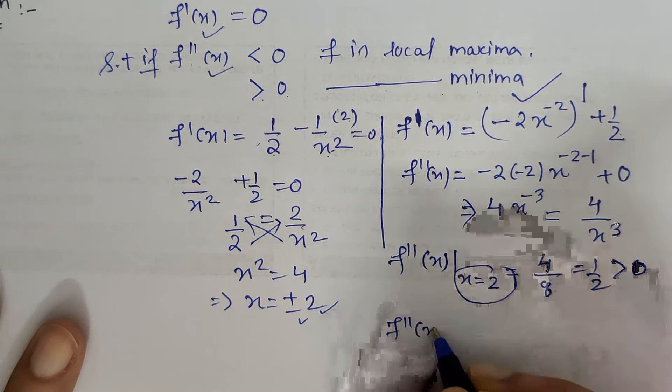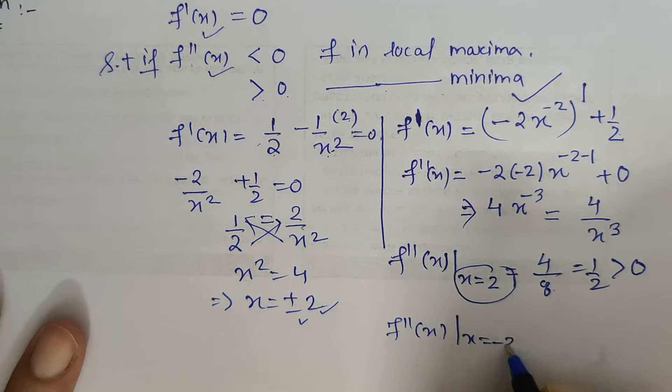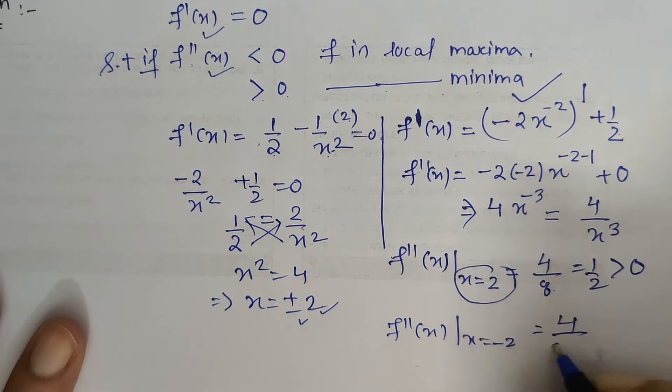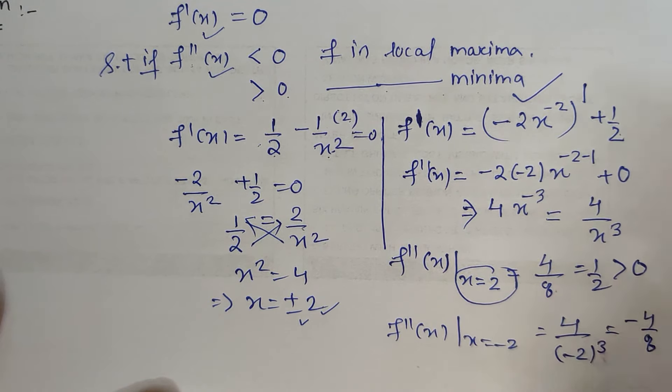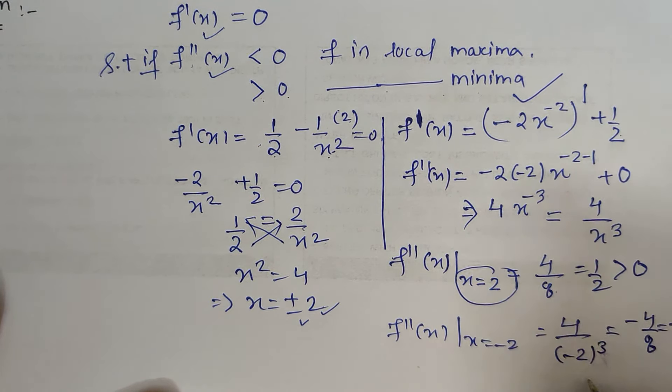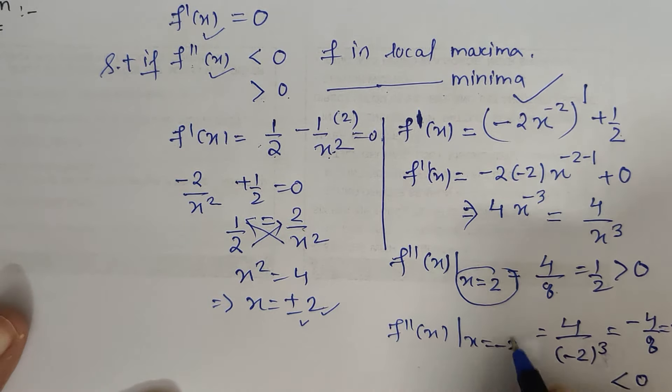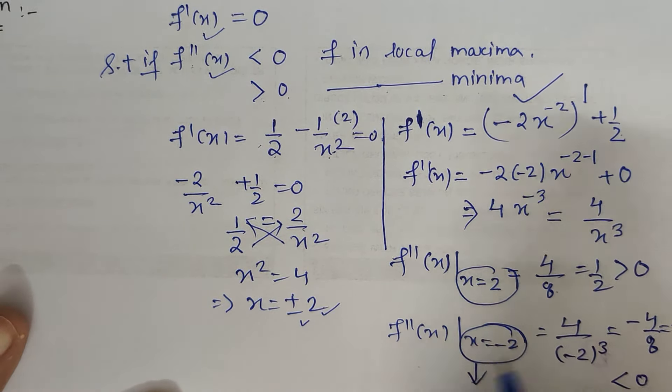Now if I check the other critical point x = -2, I get 4/(-2)³, which is -4/8 or -1/2, which is less than 0. So x = -2 is the point of local maxima.